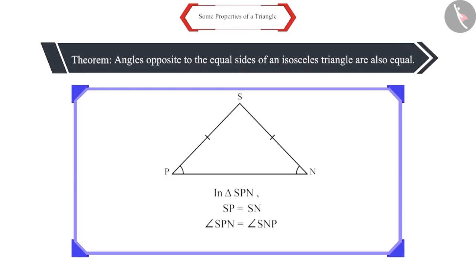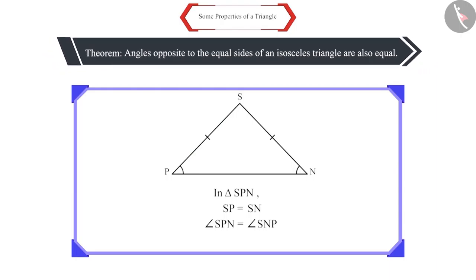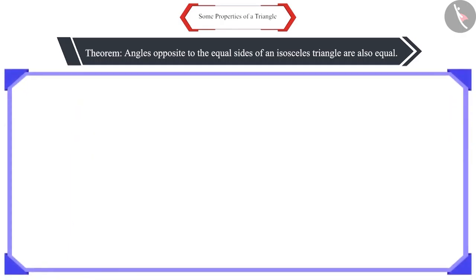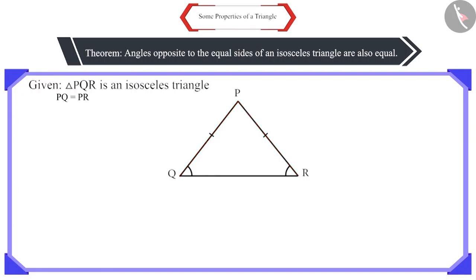This is an important result. This can be proved by several methods. With the help of this statement, let us construct another triangle. Triangle PQR is an isosceles triangle. It is given that side PQ is equal to side PR. This has been given to us.